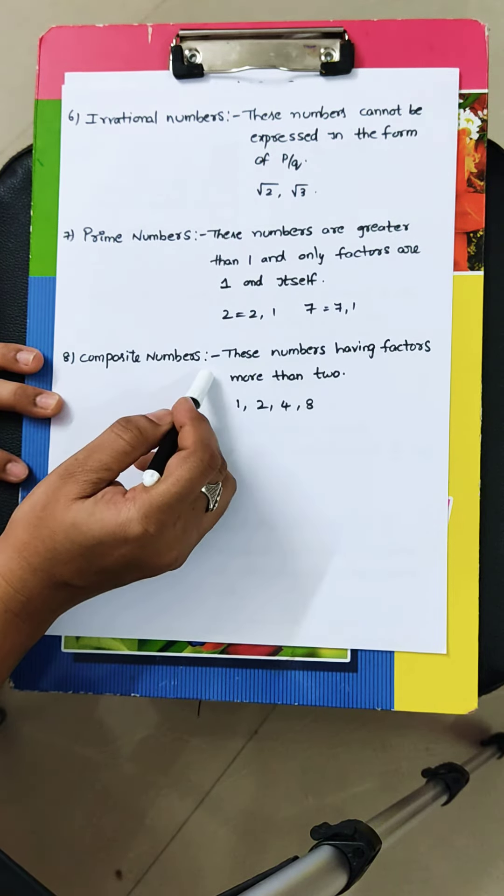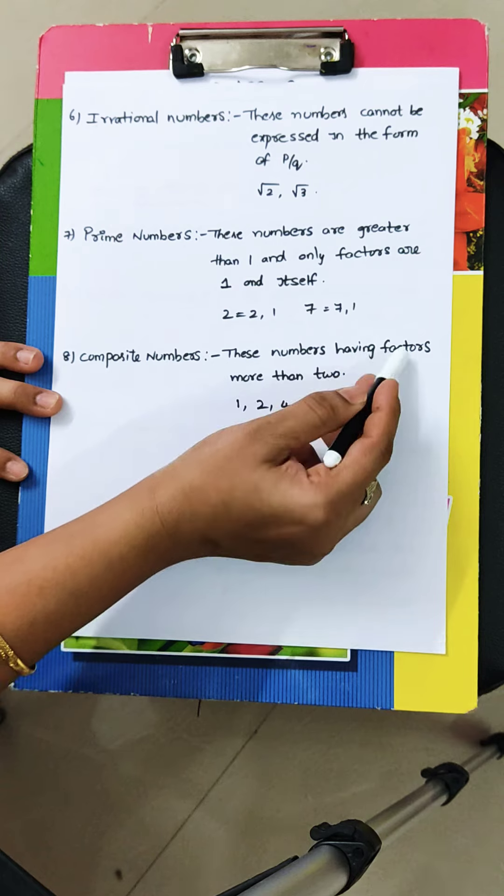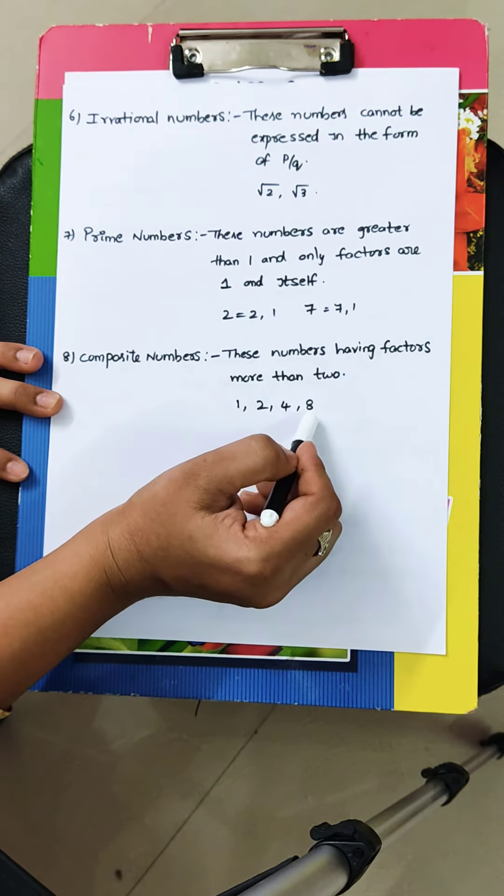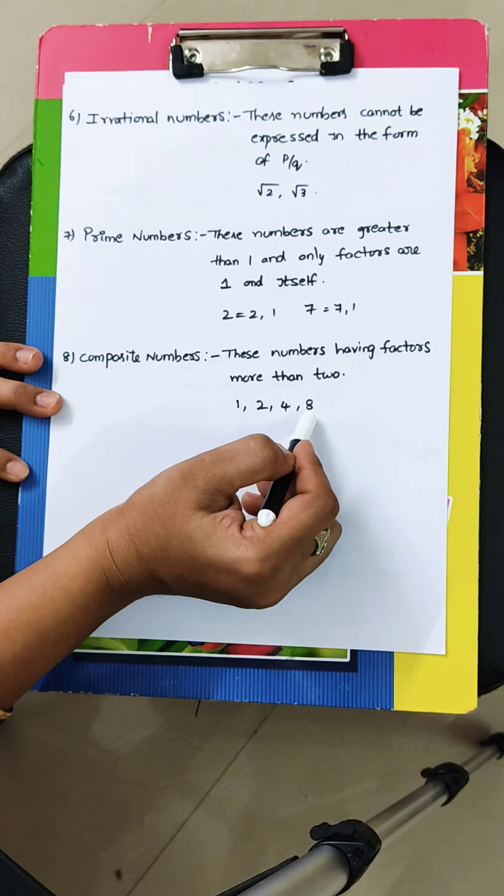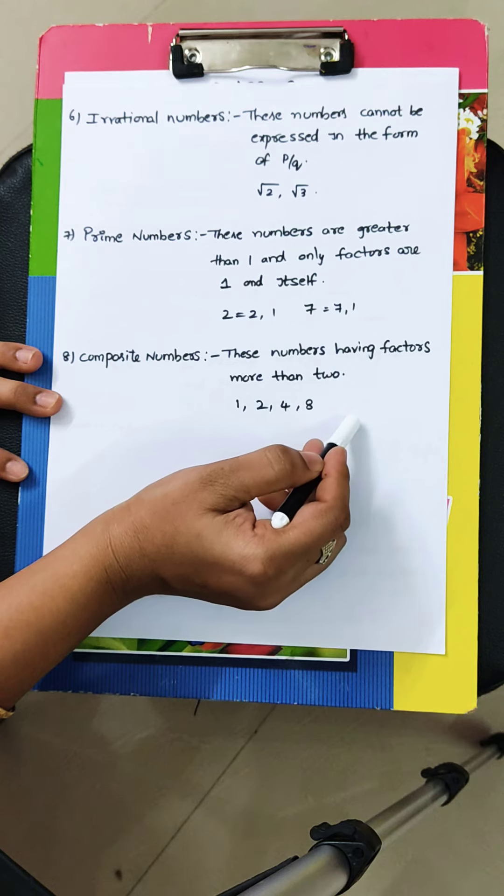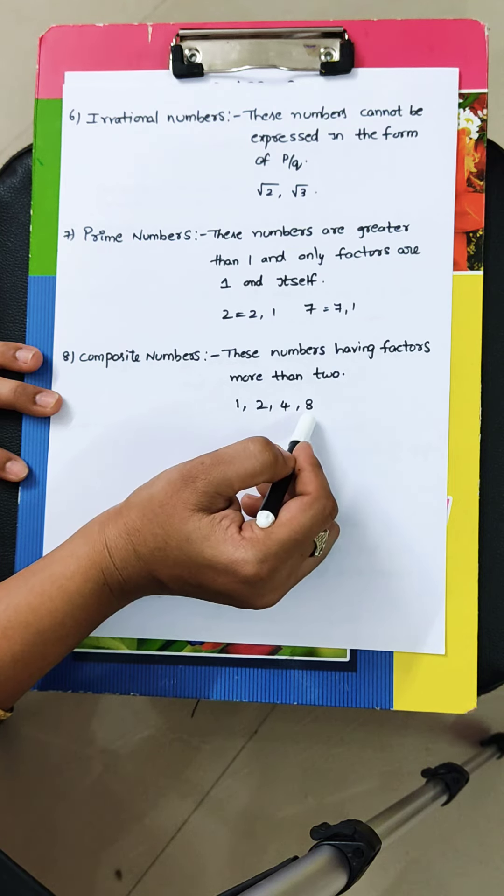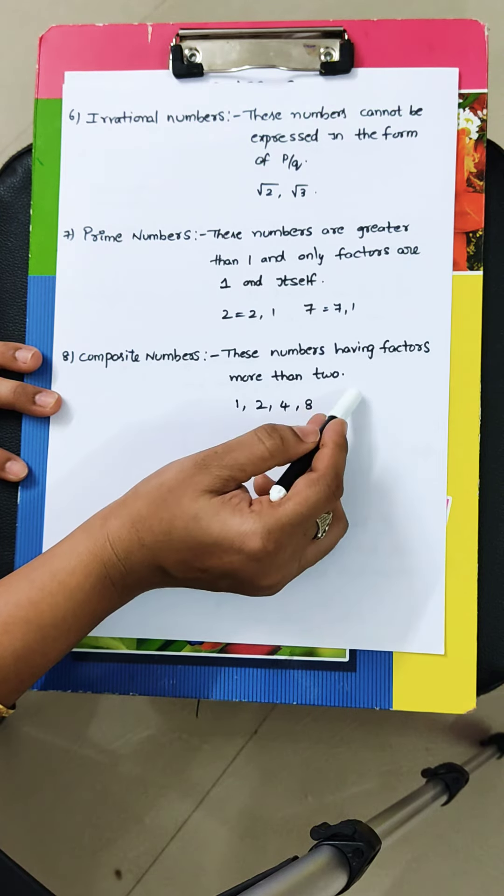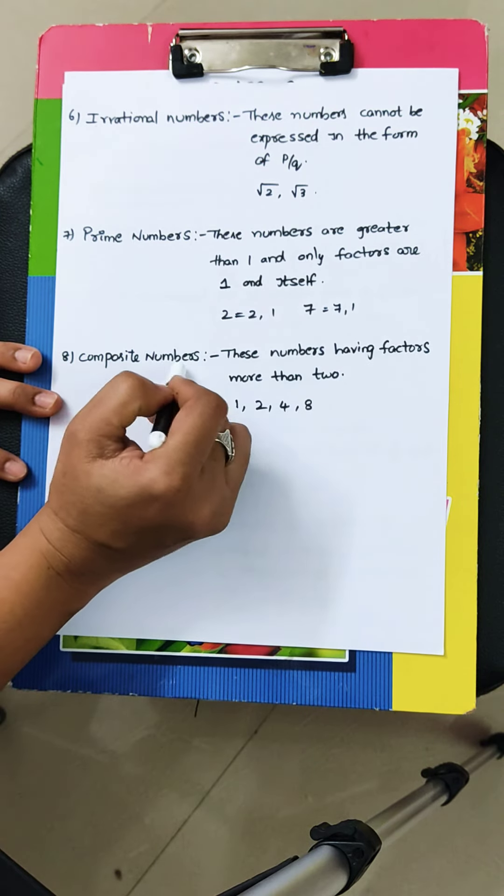Composite numbers. What are the composite numbers means? These numbers having the factors more than 2. More than 2 means, suppose example 8. If you take 8, it will go 2 table, 2 4s are 8. It will go 4 table, 4 2s are 8. 1 into 8, 1 table also, 8 tables, 8 ones are. So, more than 2 factors in the sense, composite numbers.